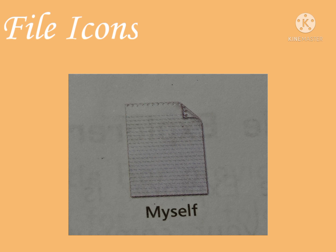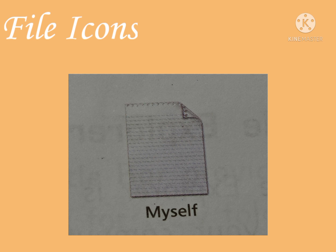We can see the file icons and their associated programs and file types. A text file icon is associated with Notepad. A document file icon is associated with Word 2016. A spreadsheet icon is associated with Excel 2016. A presentation file icon is associated with PowerPoint 2016. An audio file such as mp3 has a music symbol icon and is associated with Windows Media Player. Please go through files, folders, and sub-folders — all of that we can see on the next page.